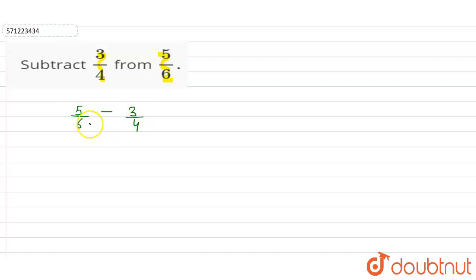So firstly, to simplify this question, we have to make the denominator equal. So we have to take the LCM of 6 and 4. We have to take the LCM of 6 and 4.